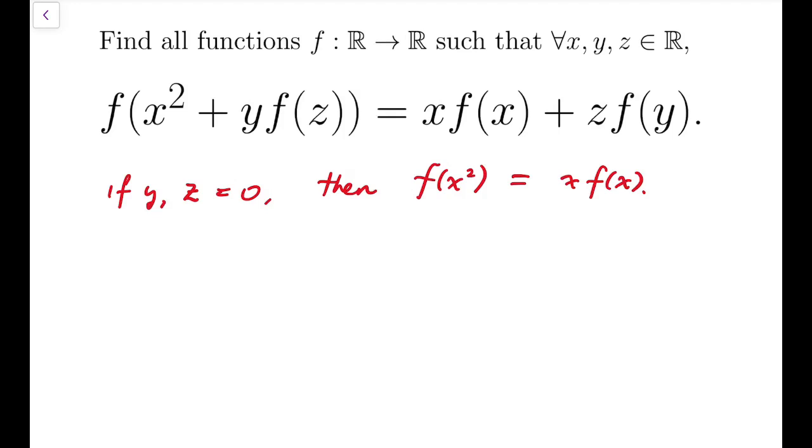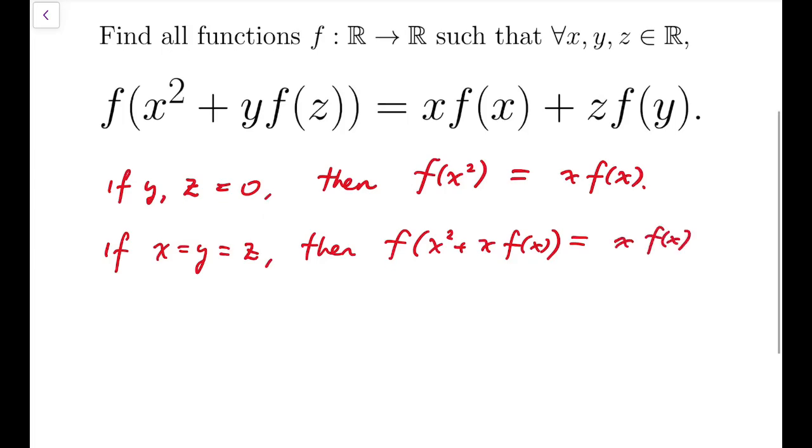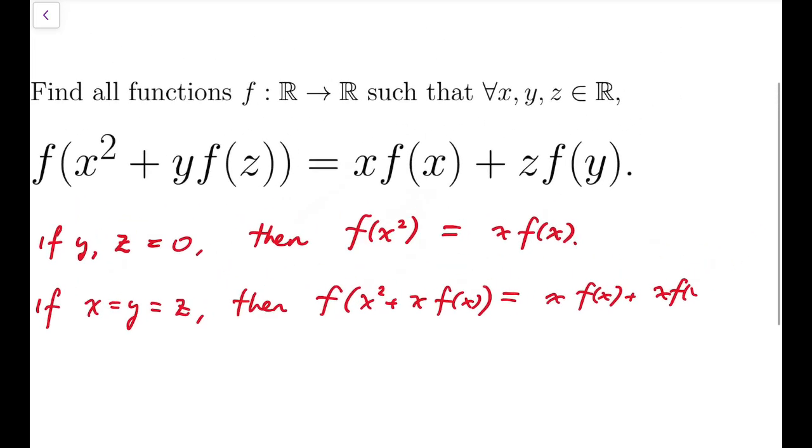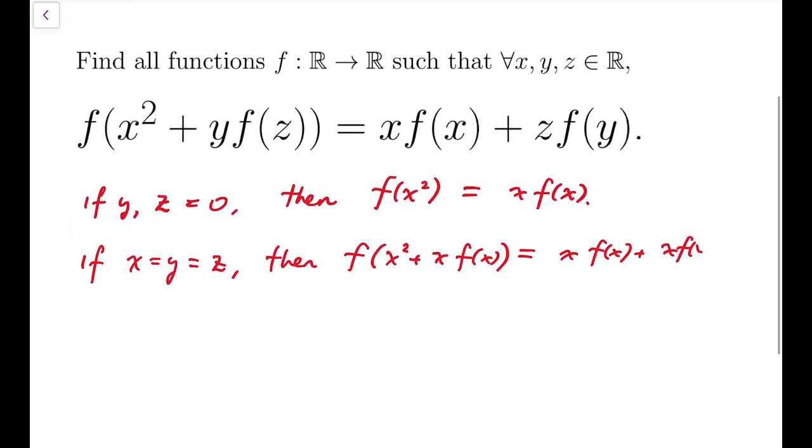And then afterwards, I'm going to just replace y and z to be both to be x. Then left-hand side will become f of x squared plus x times f of x, and right-hand side would be x f of x plus x f of x.